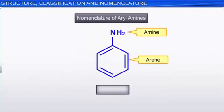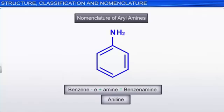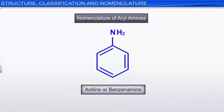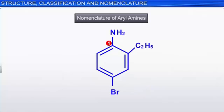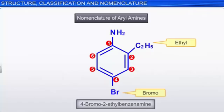Now let us see the nomenclature of aryl amines. While naming aryl amines according to the IUPAC system, the suffix 'e' of the arene is replaced by 'amine'. Thus, in the IUPAC system, aniline is named benzenamine. Note that aniline has also been accepted as the IUPAC name. Substituted derivatives of aniline are named by assigning the number 1 to the carbon atom that contains the NH₂ group, with substituents listed in alphabetical order. For example, this compound is named 4-bromo-2-ethylbenzenamine.